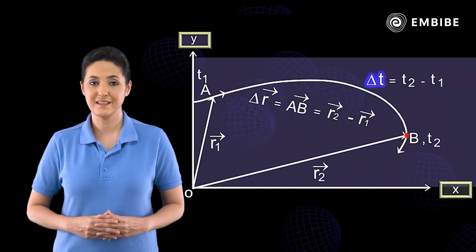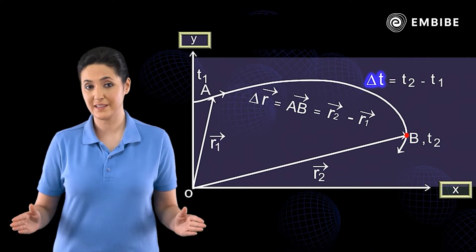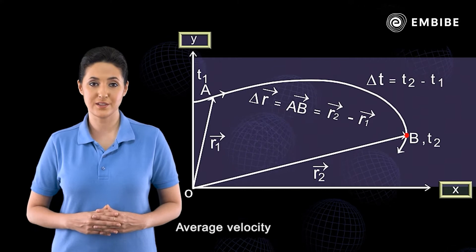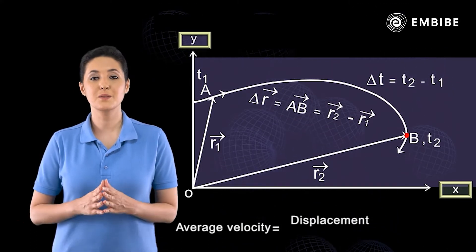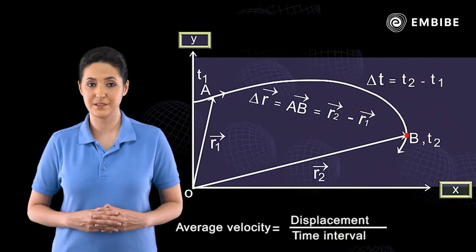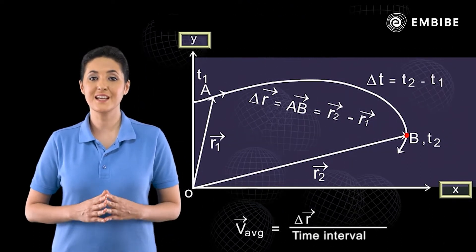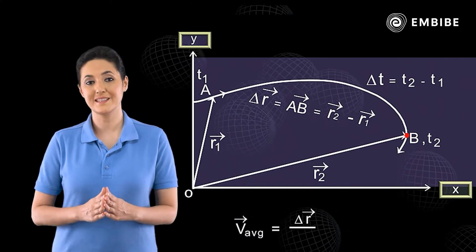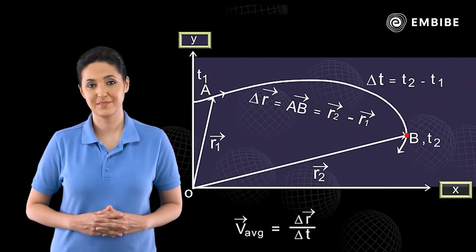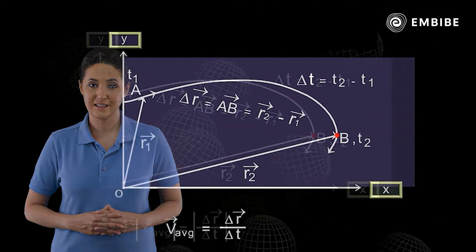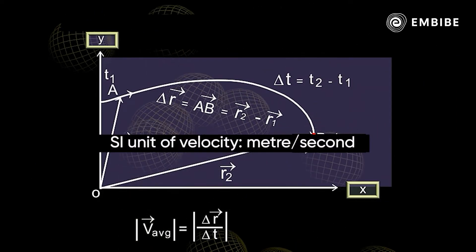Thus, for the given interval of time delta t, the average velocity is defined in the following way: average velocity equals displacement upon time interval. Therefore, average velocity equals delta vector r upon delta t. The average velocity is a vector quantity. The SI unit of velocity is meters per second.